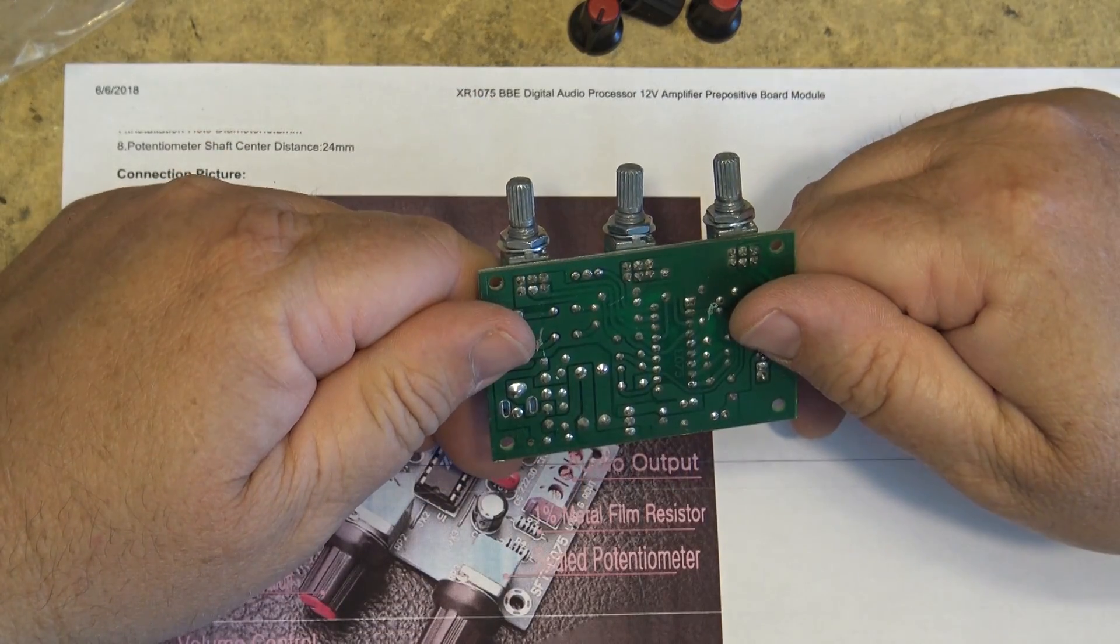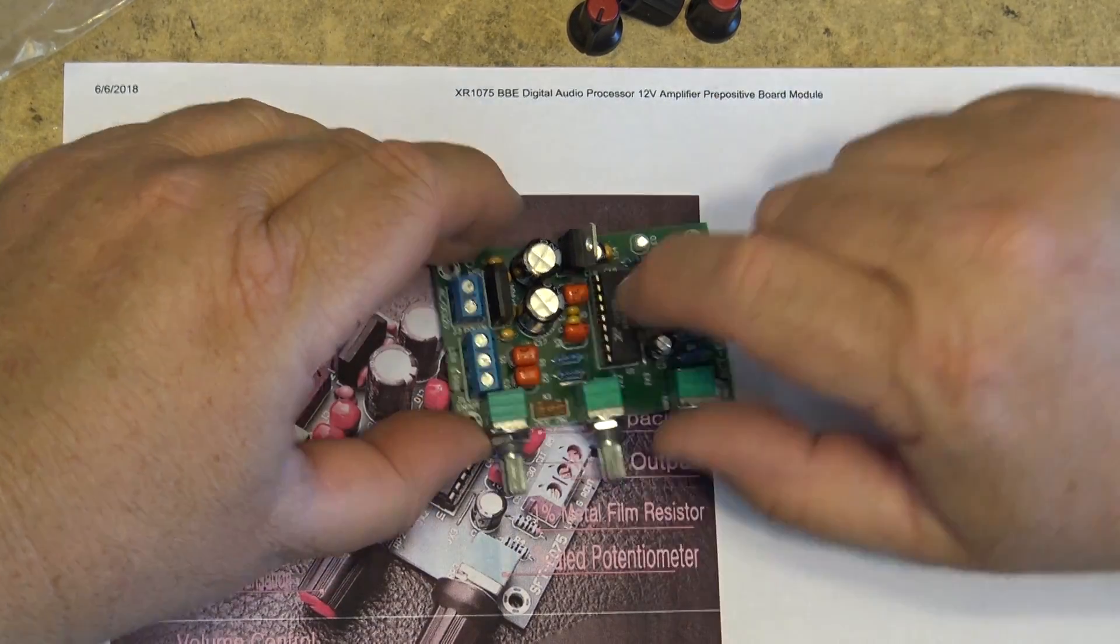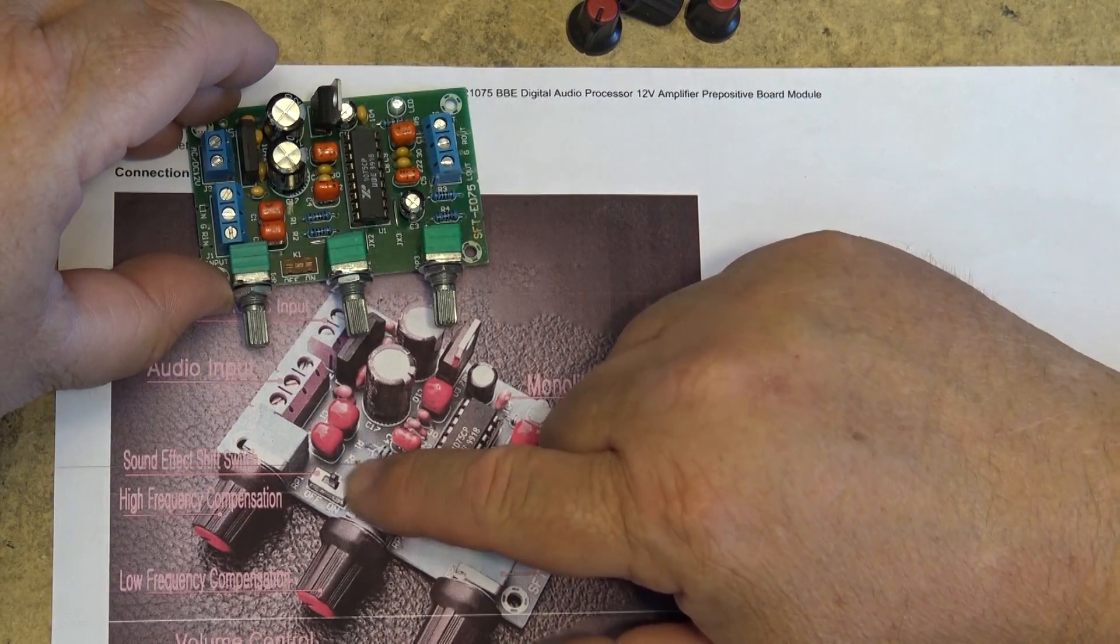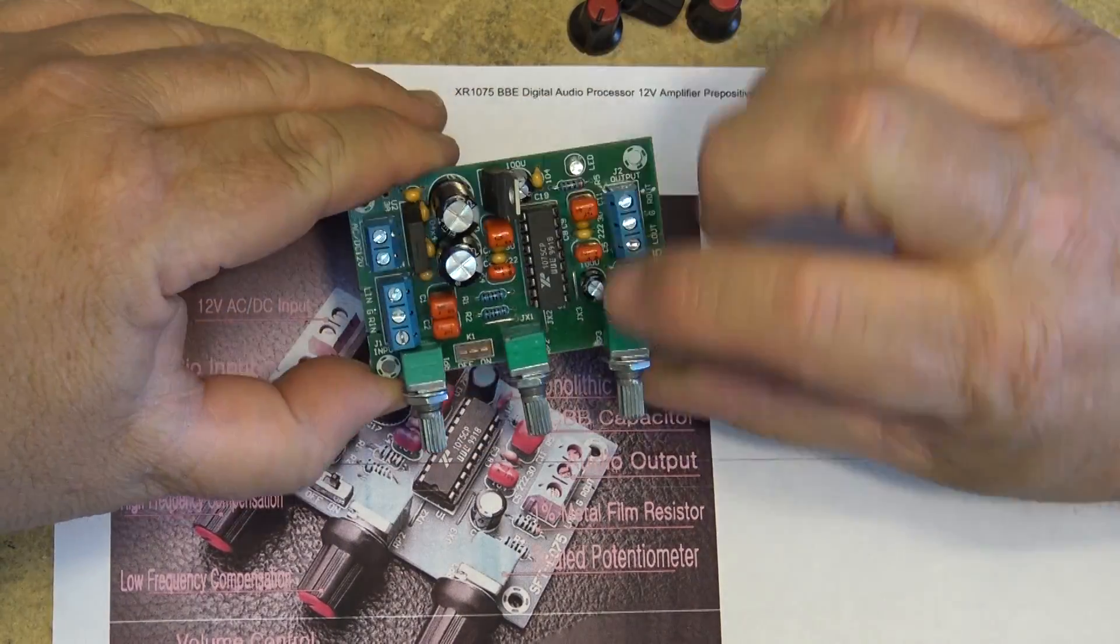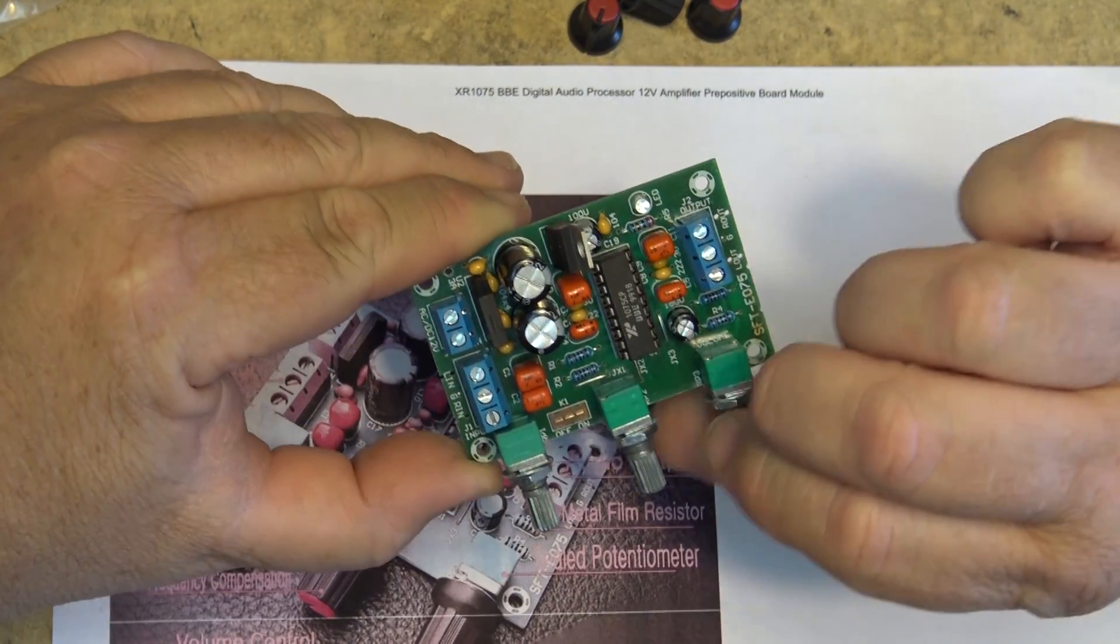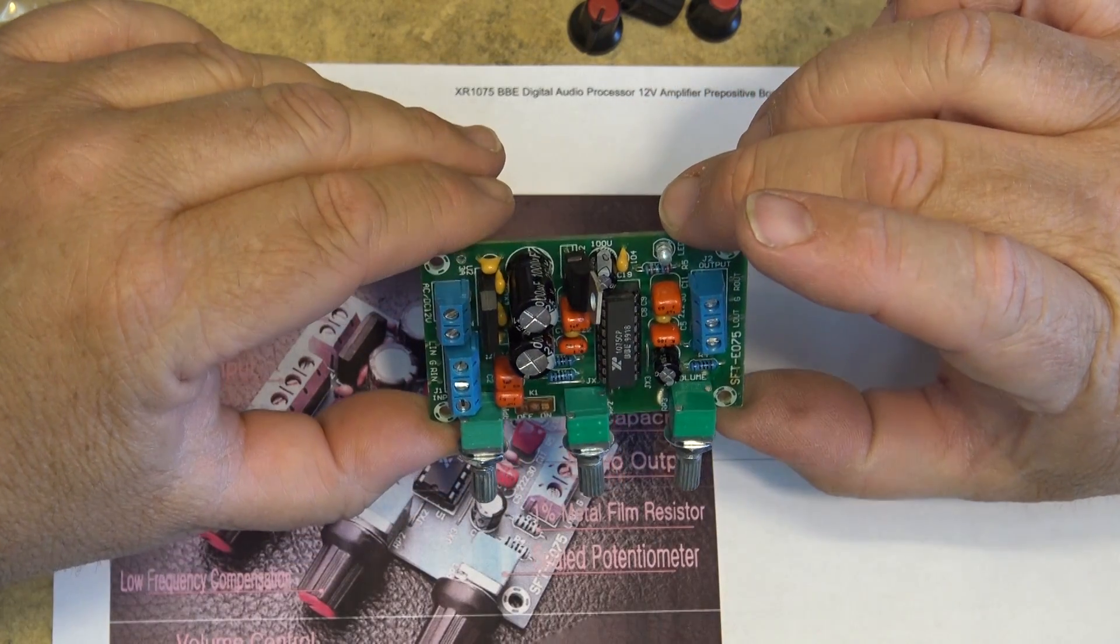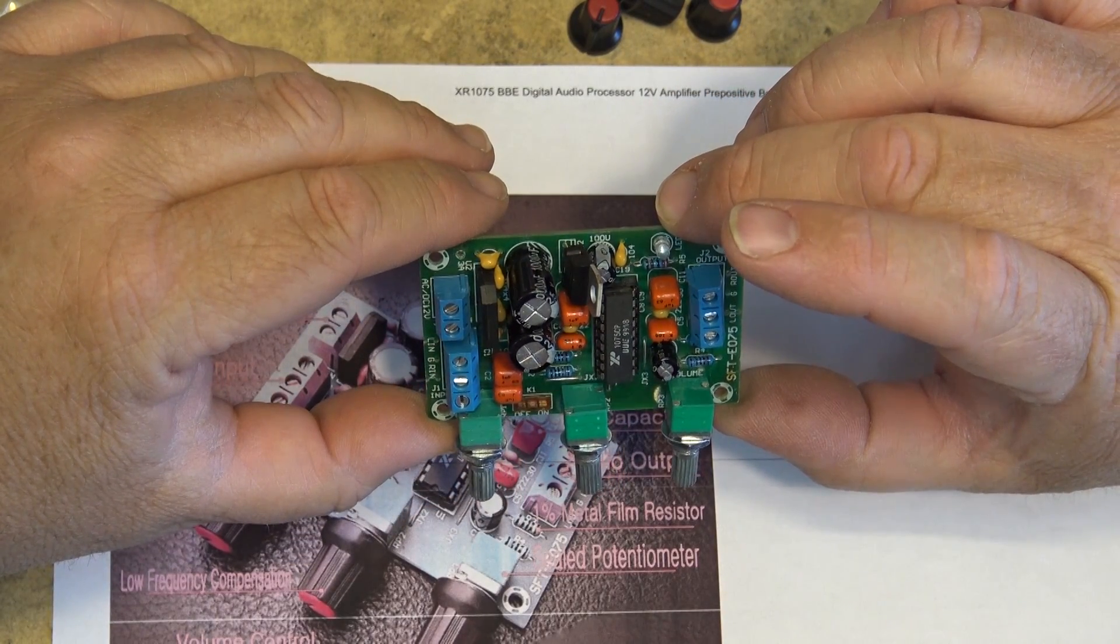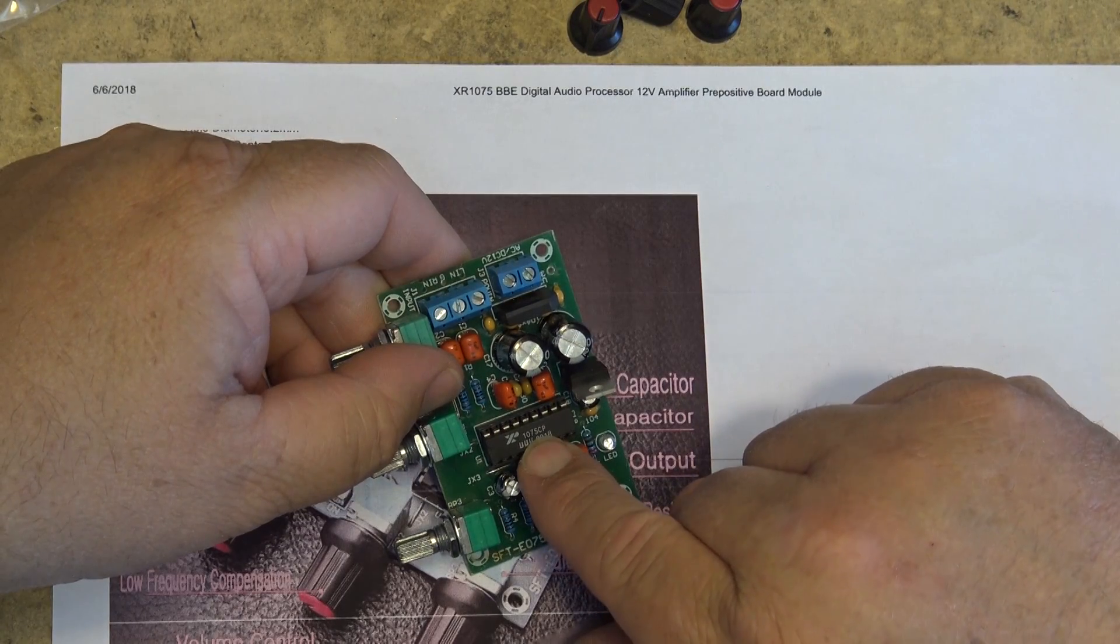It's just that I'm going to have to jumper this manually. It's got a little effect switch down here. It says sound effect switch. And basically what this is, is it's a bass and treble control with a volume control and an effect switch. I don't know what the effects do. So I guess we'll hook this thing up and see how it works. But it's the XR1075 CP is the chip.